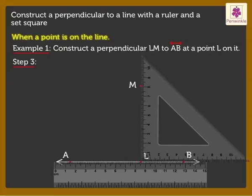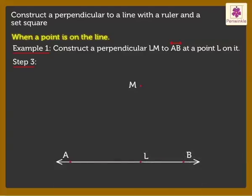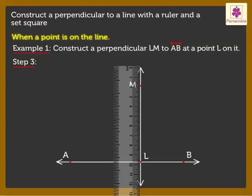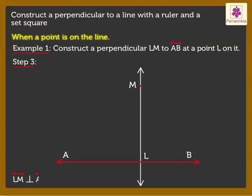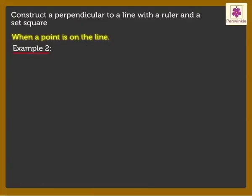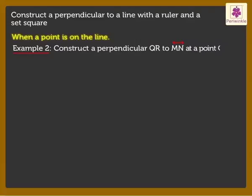Step 3: Remove the Set Square. Draw Line LM using a Ruler. Line LM perpendicular to Line AB is obtained. Now let us solve another example of the same type. Construct a perpendicular QR to Line MN at a Point Q on it.